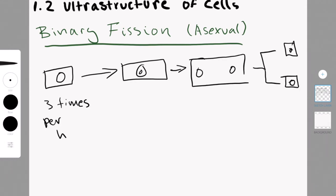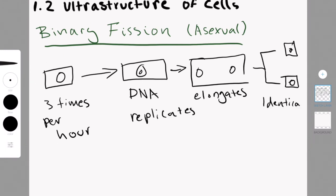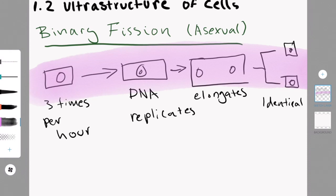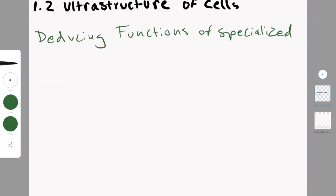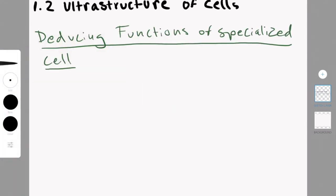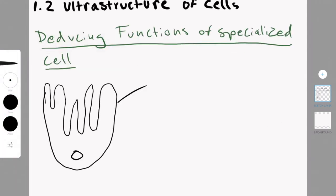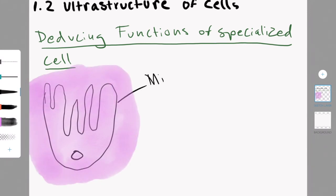The cytoplasm is the liquid component, site of chemical reactions. The Golgi apparatus receives proteins from the RER, rough endoplasmic reticulum, modifies and repacks them for secretion. That is it for the plant cell.